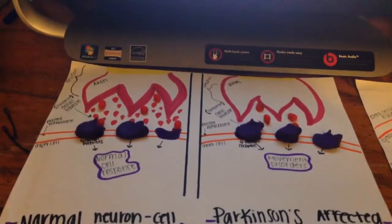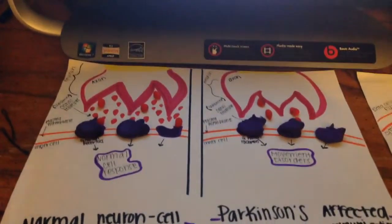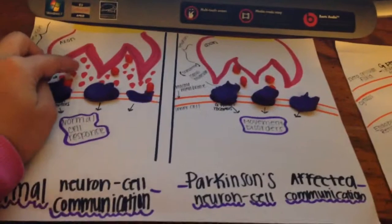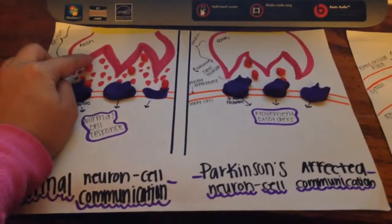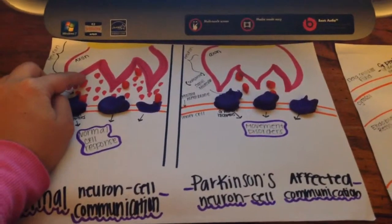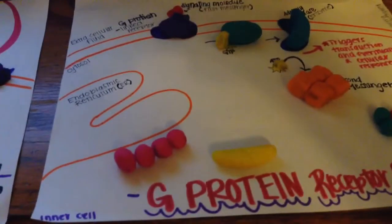The error that occurs in Parkinson's brain is the lack of dopamine. The ligand, however, everything else in the pathway is the same as a healthy G-protein receptor system.